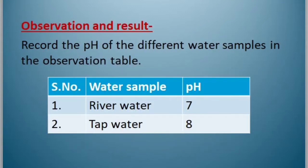Observation and result: Record the pH of the different water samples in the observation table. River water has a pH of 7 and tap water has a pH of 8.